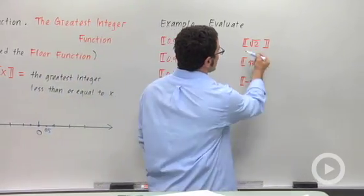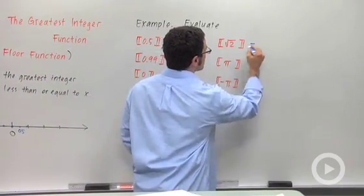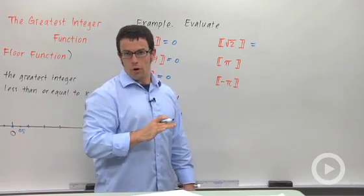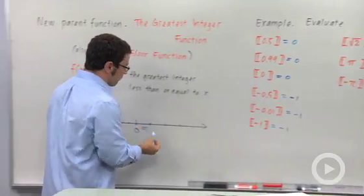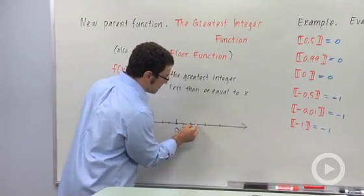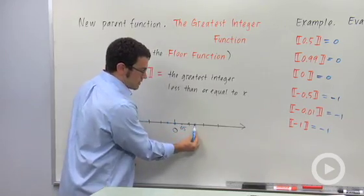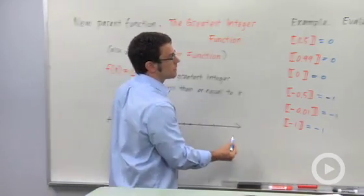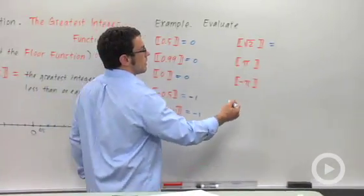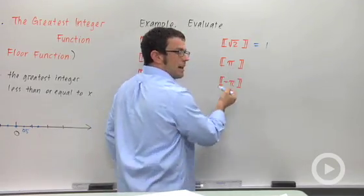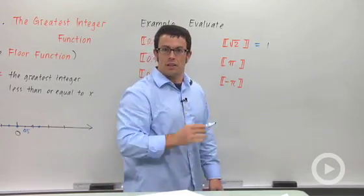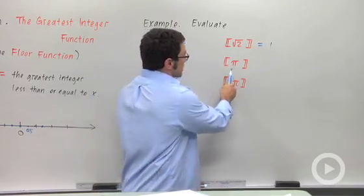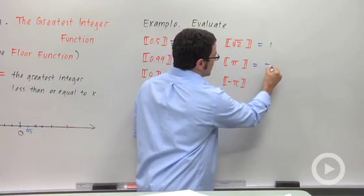What about something like root 2? The square root of 2 is about 1.41, which falls between 1 and 2, so the greatest integer less than or equal to root 2 is 1. How about pi? Pi is just a little more than 3 — about 3.14 — so the greatest integer less than or equal to pi is 3.